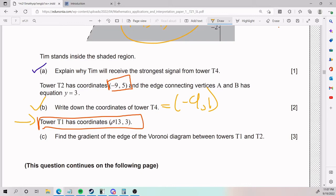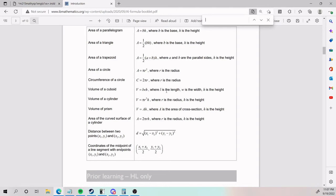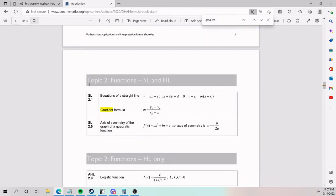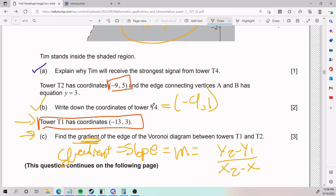They gave us the information that tower T1 has the coordinates, and now we need to find the gradient of the edge of the Voronoi diagram between towers T1 and T2. What the hell is gradient? Gradient is the same as slope, which is the same as the symbol M, which is the same as the thing in my trusty rusty formula booklet that y2 minus y1 divided by x2 minus x1. This is in your formula booklet. It is right there. Look at it. This is a tool that you can use always. So I need to plug in this information.